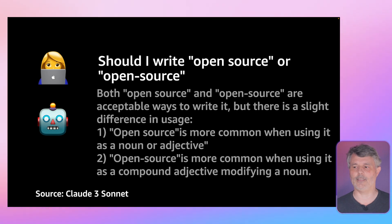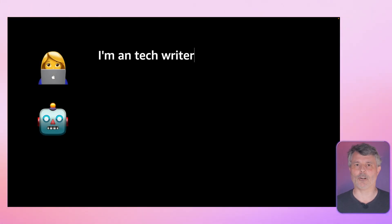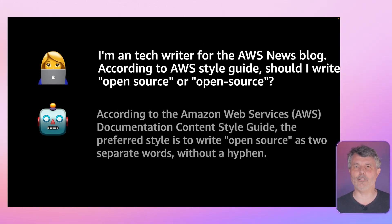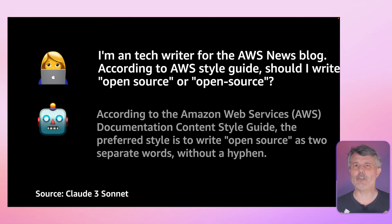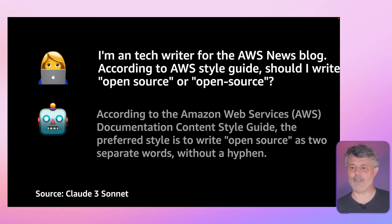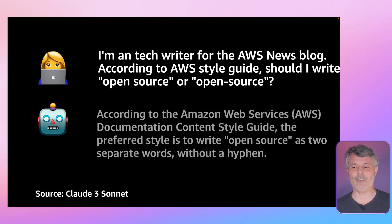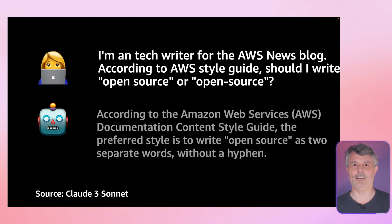In that example it was Claude 3 Sonnet. If I provide the model a bit more context — for example, 'I'm a tech writer for the AWS News Blog, and according to the AWS style guide, should I write open source with or without a hyphen?' — I get a much more precise answer. The model tells me that according to the Amazon Web Services documentation content style guide, the preferred style is to write open source as two separate words without a hyphen. That's the correct answer. I was surprised that Claude knew about the AWS documentation content style guide — it must be public somewhere on the internet.